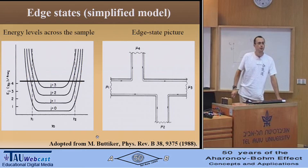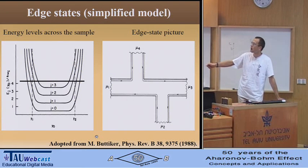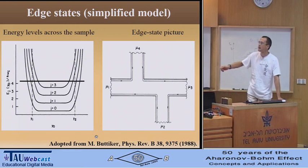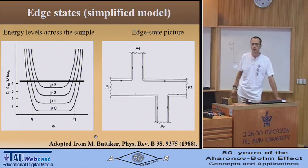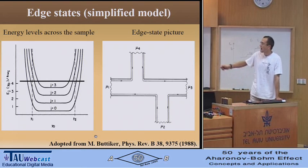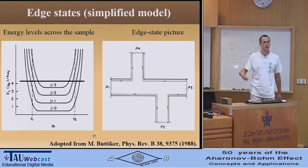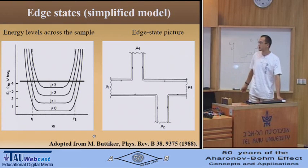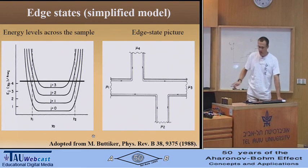My introduction will be quite short because at this conference there is no sense to speak about edge states. I only say that edge states arise at the sample edges in the quantum Hall effect regime. And the transport in this regime can be described as transport through one-dimensional edge states, as was first shown by Büttiker.